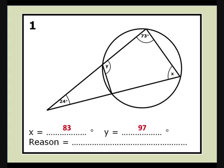So y is 97. Why? Because x and y are opposite angles in a cyclic quadrilateral, and opposite angles in a cyclic quadrilateral add up to 180 degrees.